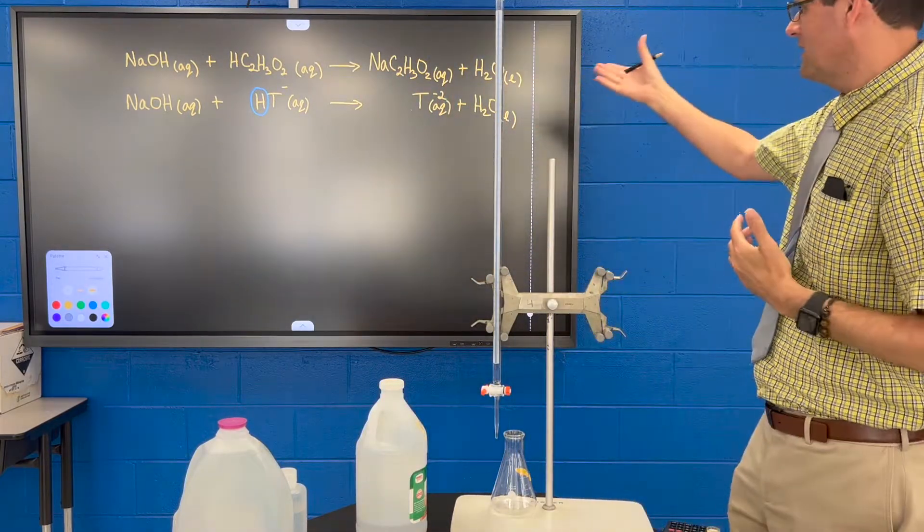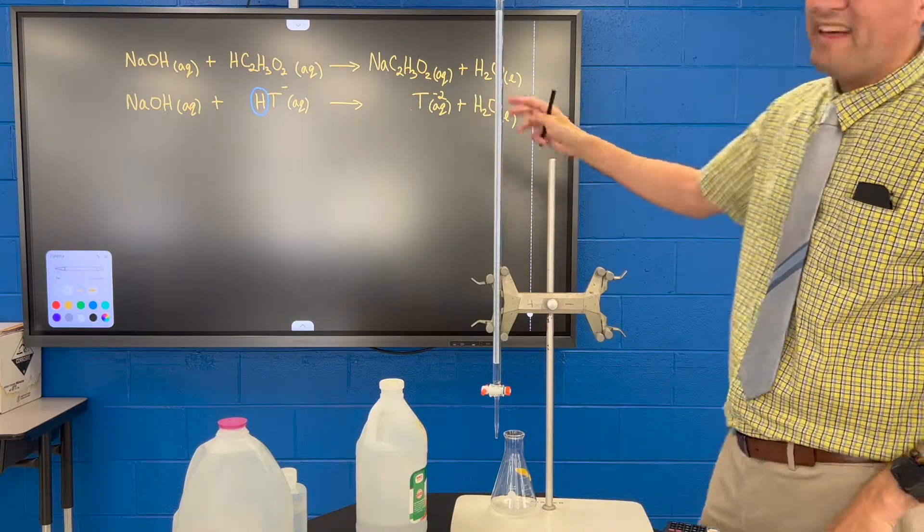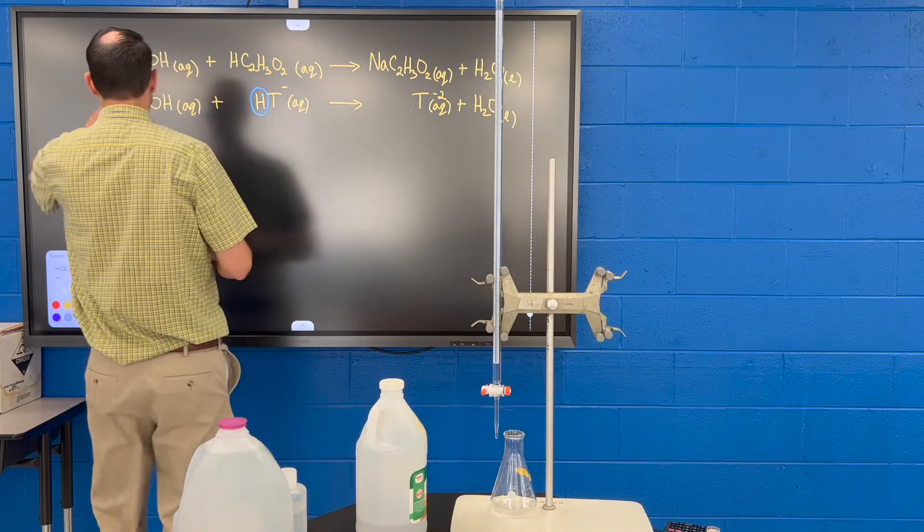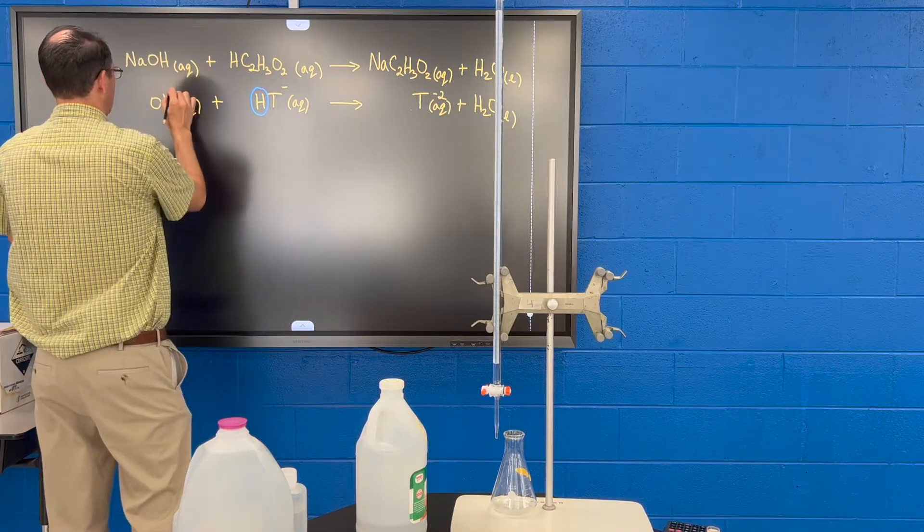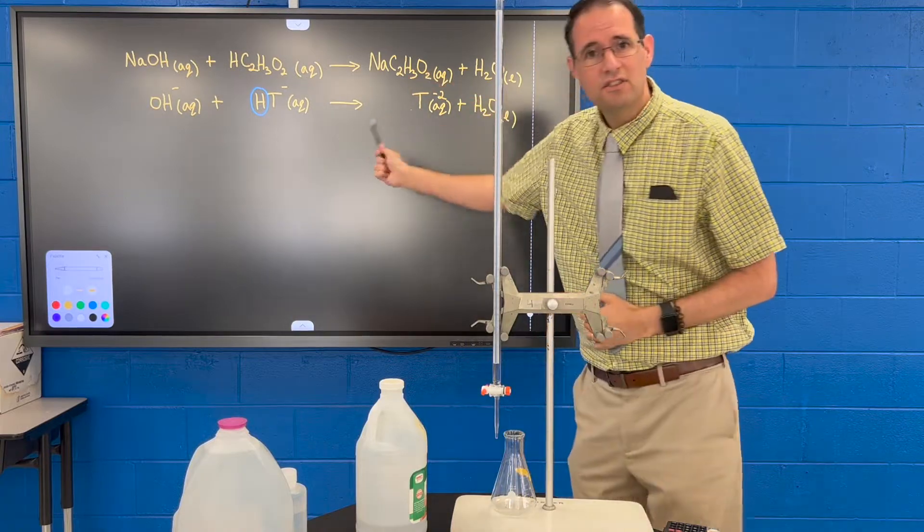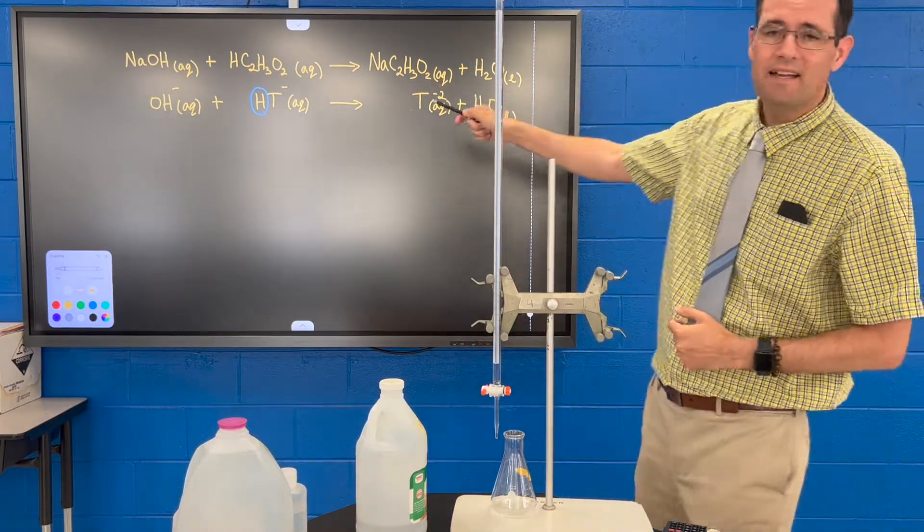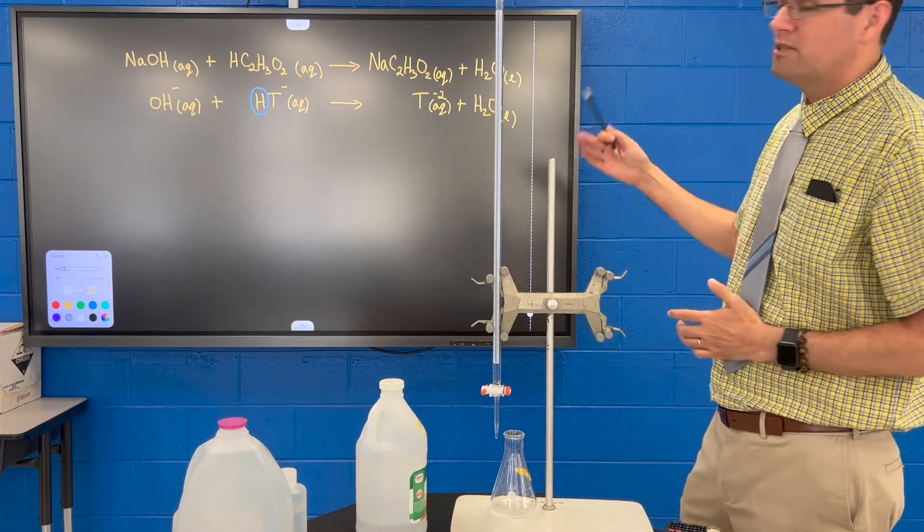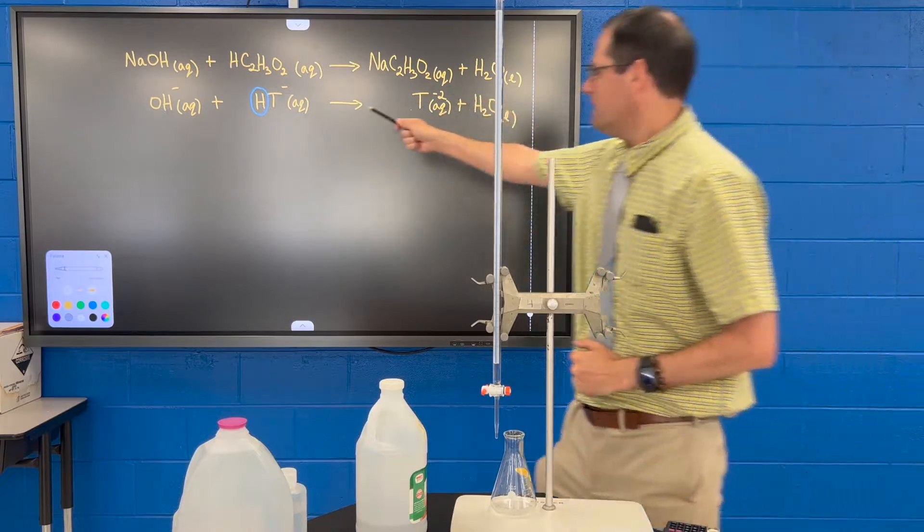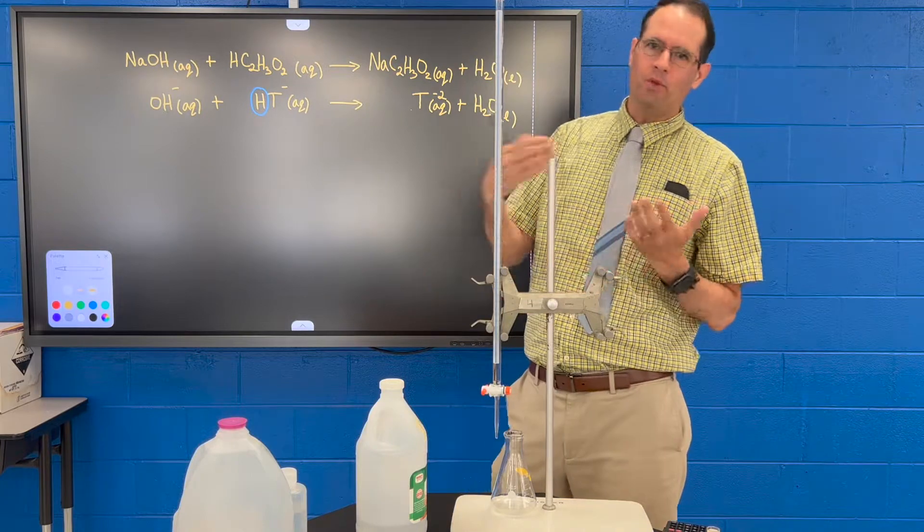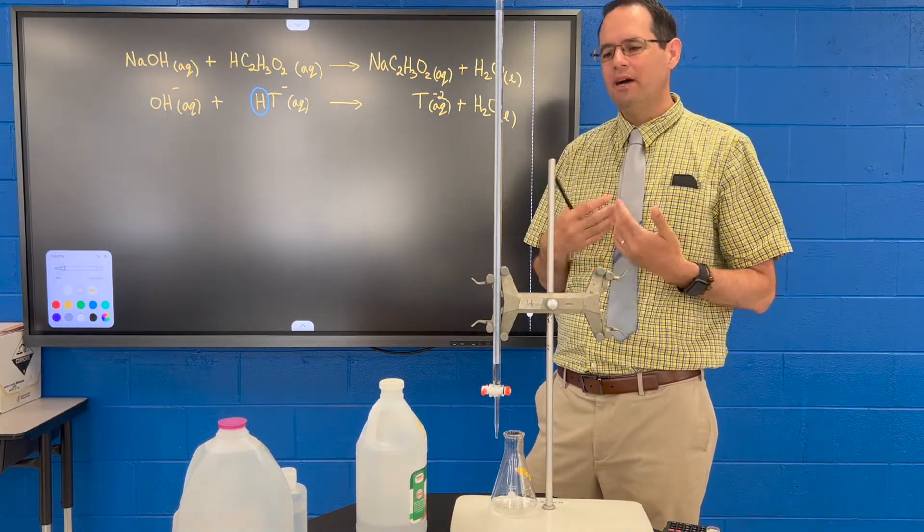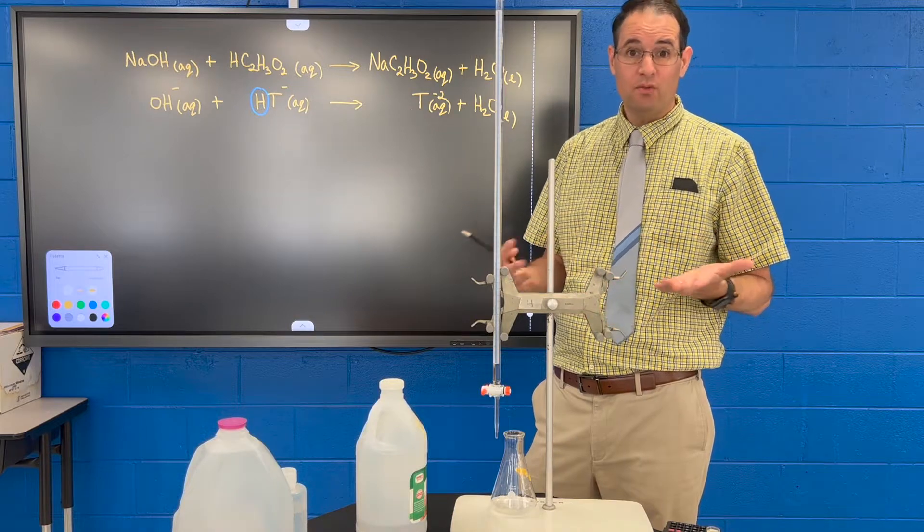So the tartrate ion - that kind of makes it more clear. And we'll even erase this sodium here, and then it's very clear that hydroxide is your base, hydrogen tartrate's the acid, and it's that H there that's going to be removed. So if we can calculate the moles of H, we therefore know the moles of hydrogen tartrate, which is equal to the moles of potassium hydrogen tartrate, the substance we're interested in knowing what its concentration is.